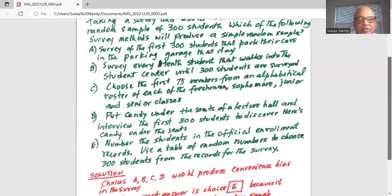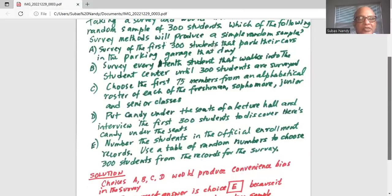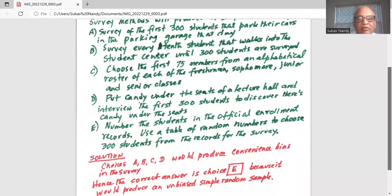Solution to this problem. Choices A, B, C and D would produce convenience bias in the survey. Hence the correct answer is choice E because it would produce an unbiased simple random sample.